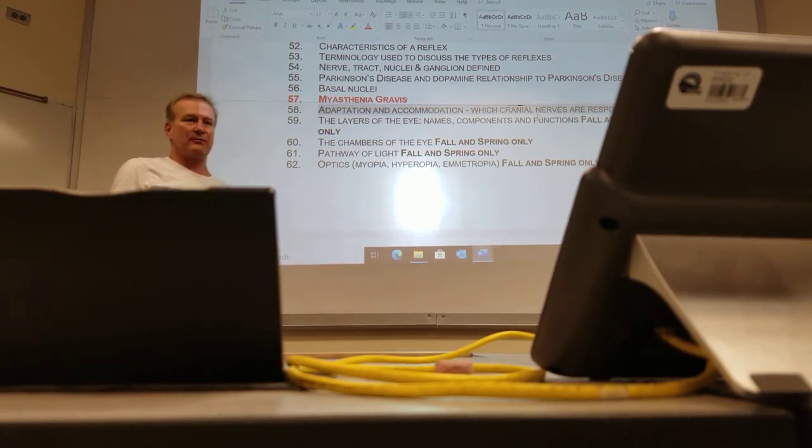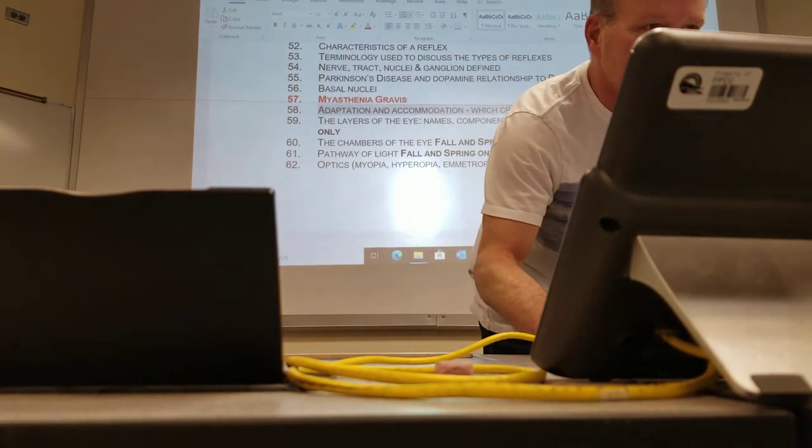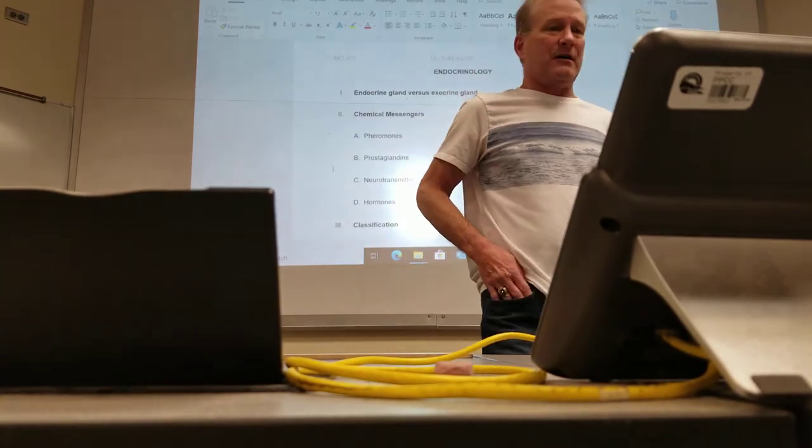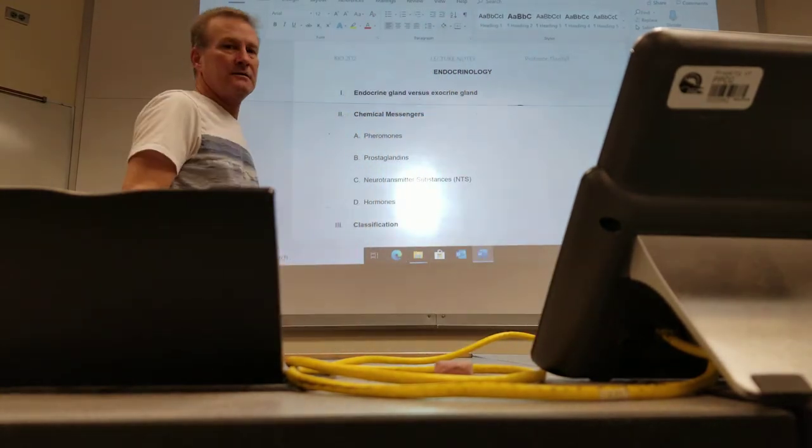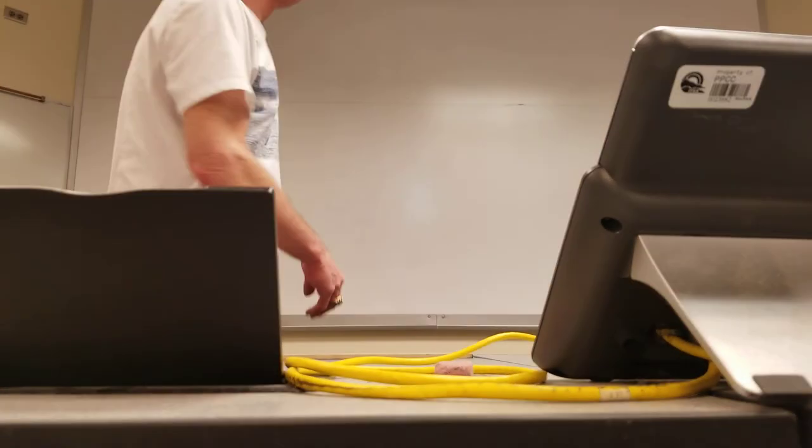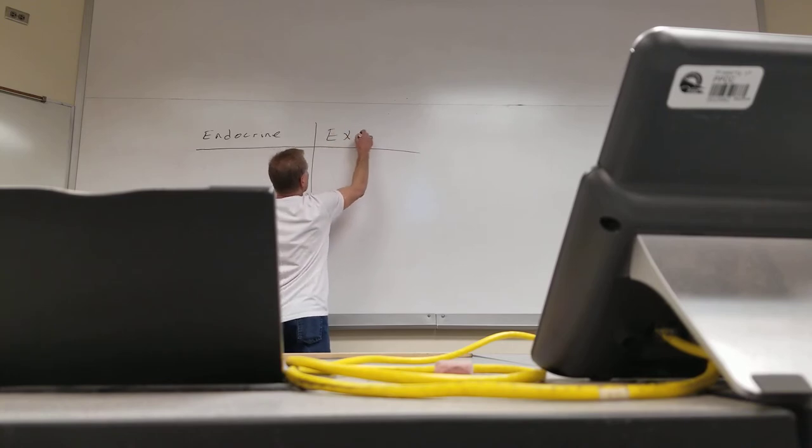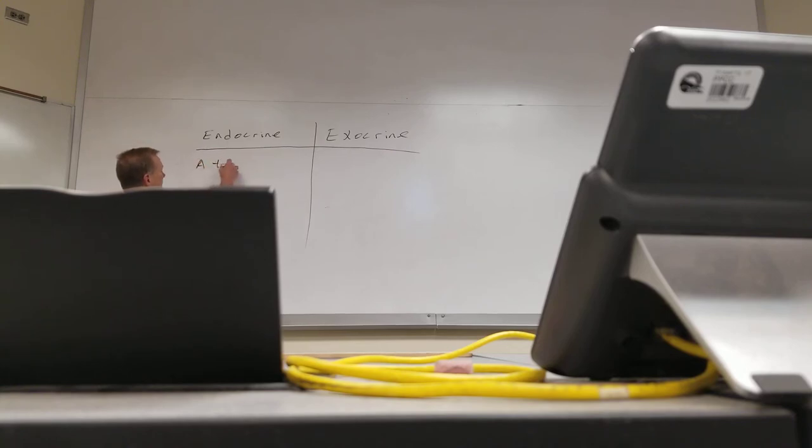Okay, just before we jump into the endocrine system, which is where we are. So endocrine system is where we are. First thing to do is to talk about the word and sort of compare it with another word. So, endocrine is a type of gland, they're ductless glands.